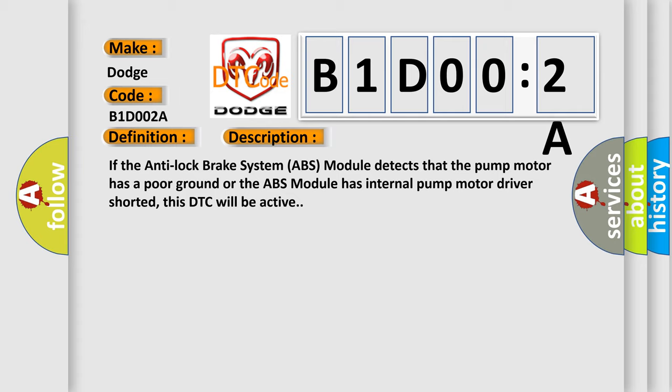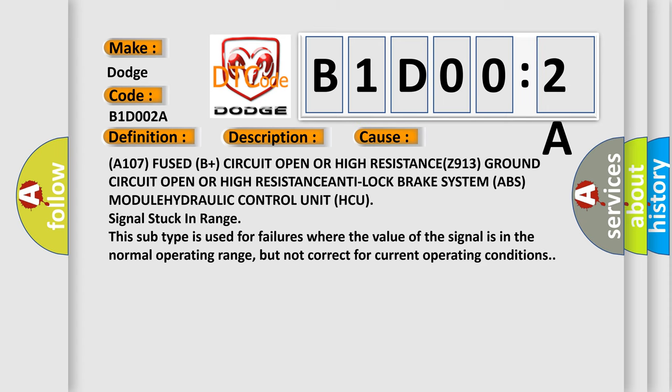This diagnostic error occurs most often in these cases: A107 fused B plus circuit open or high resistance, Z913 ground circuit open or high resistance, anti-lock brake system ABS module hydraulic control unit HCU signal stuck in range. This subtype is used for failures where the value of the signal is in the normal operating range, but not correct for current operating conditions.